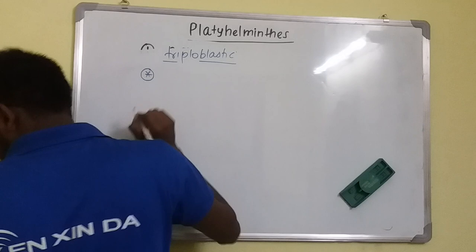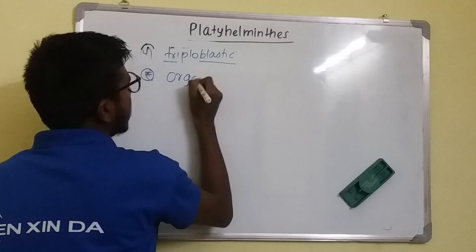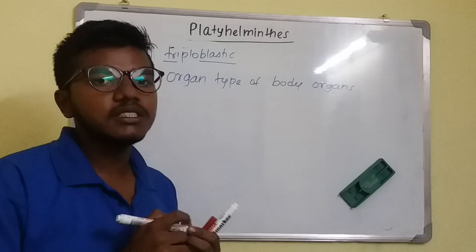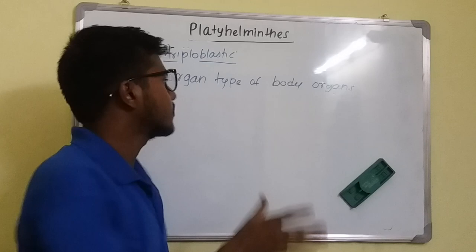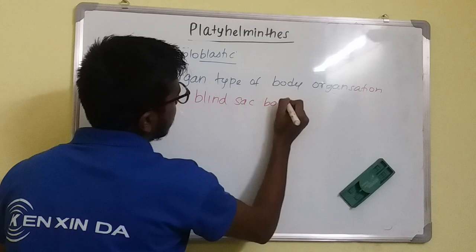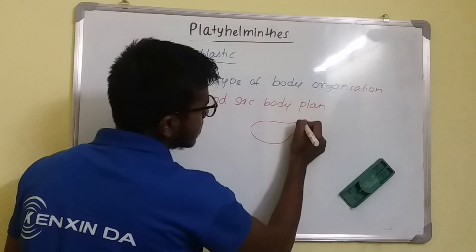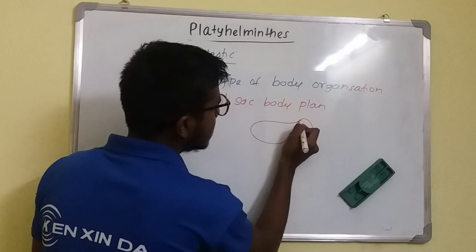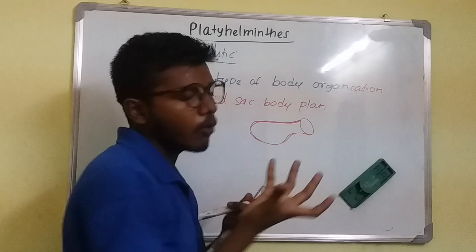They have organ-level body organization: cells combine to form tissues, and tissues combine to form organs, but there is no organ system. They also have a blind sac body plan, meaning the body has only one opening that serves as both mouth and anus. There is no distinct anus — unlike our tube-like body plan.